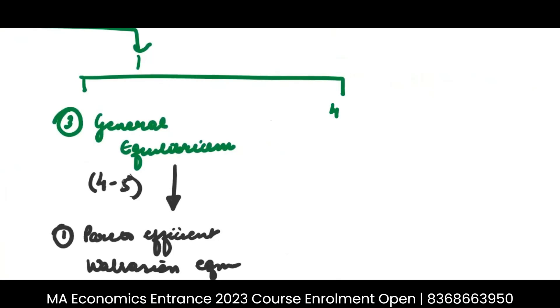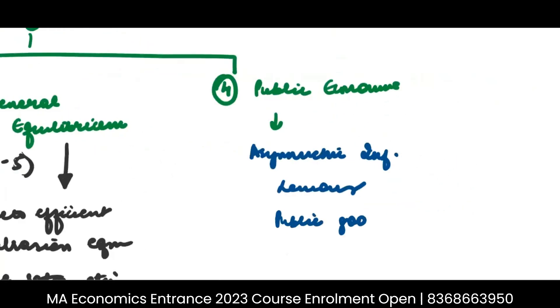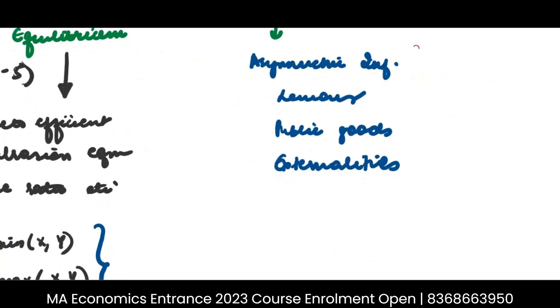Then the fourth part which comes is your public economics. So you should have a thorough understanding of asymmetric information, market for lemons, then public goods, externalities. Many questions, many questions have you have for practice from the past years. For example, I don't remember which year it was, but there was this question that came.